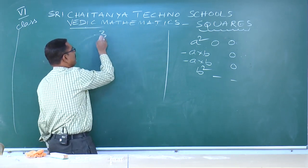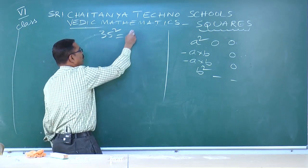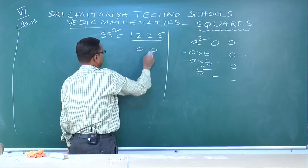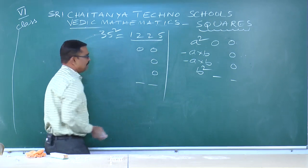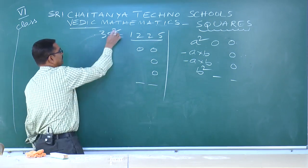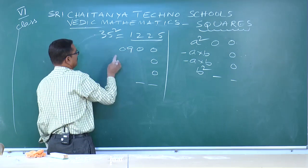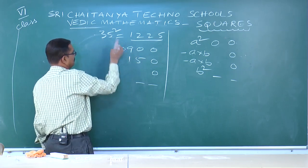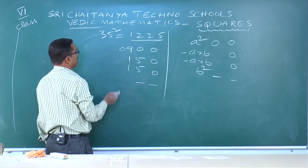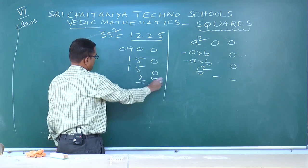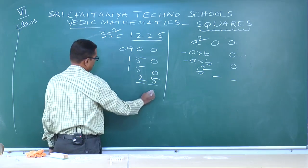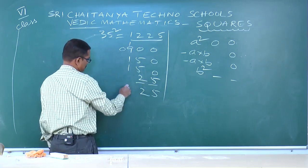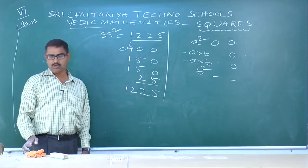Next: 35². Here a=3, b=5. Use formula: a²=3²=09, a×b=3×5=15, a×b=15 again, b²=5²=25. Add: 5; 12; 12; 12 — answer is 1225.